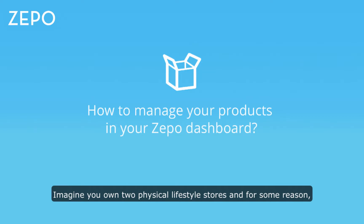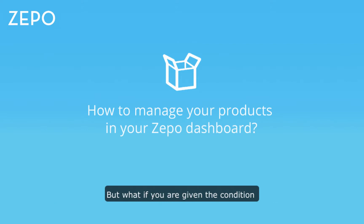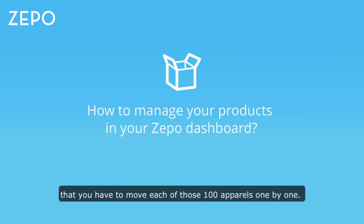Imagine you own two physical lifestyle stores and for some reason you have to shift 100 apparels from store A to store B. Not a big deal, right? But what if you are given the condition that you have to move each one of those 100 apparels one by one? How easy does it seem now? Doesn't seem easy to us either.